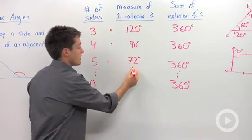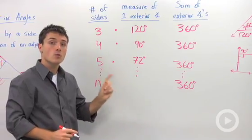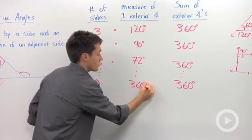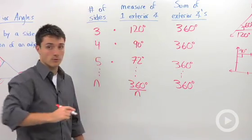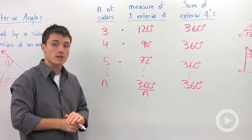If we want to find the measure of just one of these, if it's equiangular, we're going to take the total sum, which is always 360, and divide by the number of sides. So a couple of key things here.